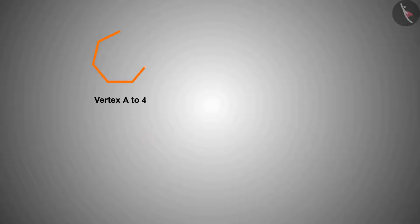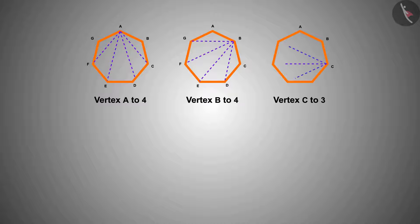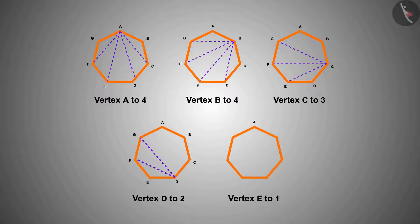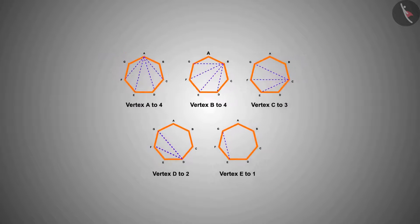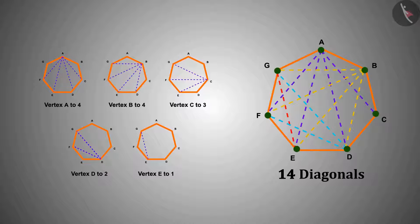From vertex A: 4 diagonals. From vertex B: 4. From vertex C: 3. From vertex D: 2. From vertex E: 1 diagonal. So a heptagon can have a total of 14 diagonals.